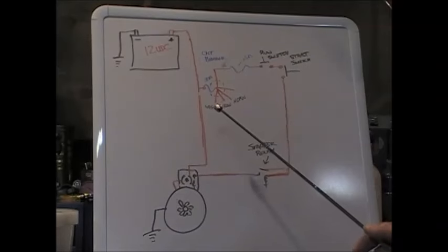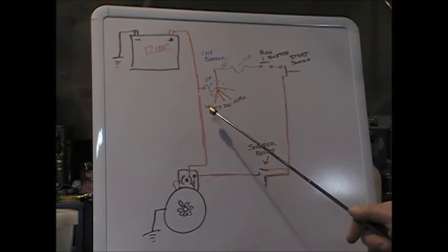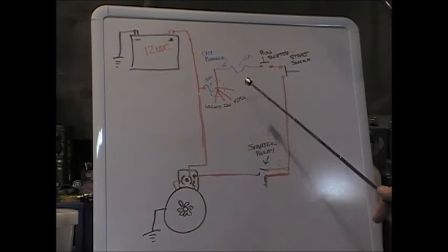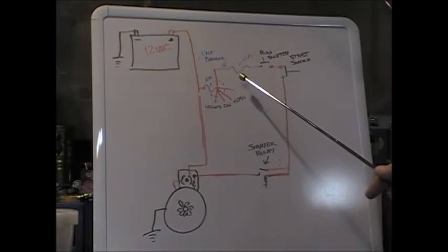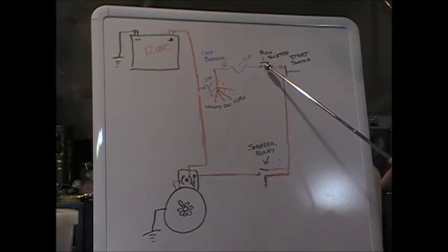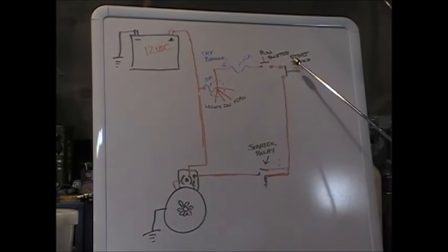Then you have a second circuit which taps off of that, goes through a 30 amp circuit breaker, and that actually provides power to the rest of the bike. This is your ignition switch here, so when you have the bike in the run or accessory position, it provides power to your lights, ignition, your horn, and in this case our run start circuit.